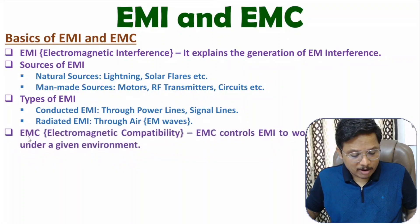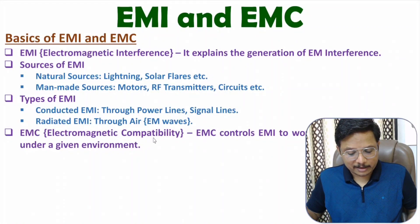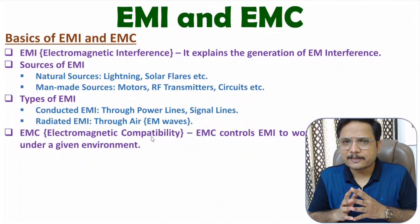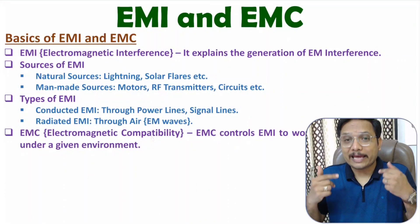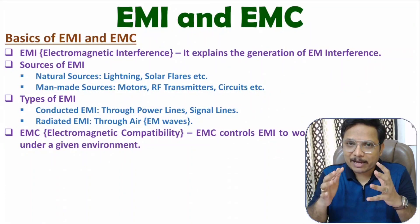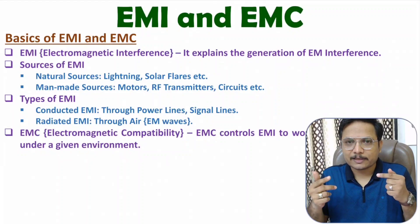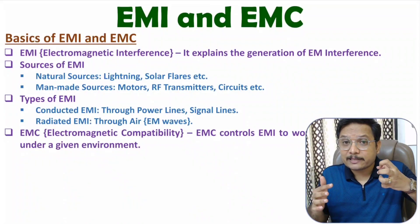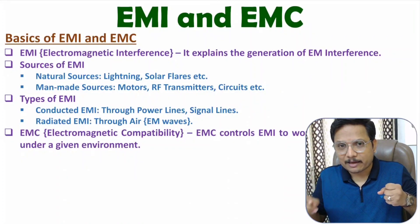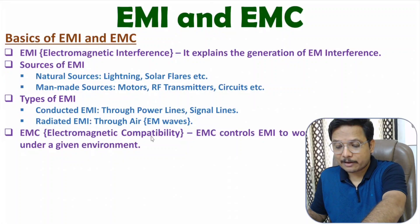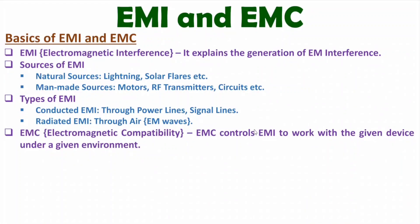If you talk about EMC, then that is electromagnetic compatibility. EMC explains control over EMI. EMI is electromagnetic interference, and EMC explains control over EMI — under how much EMI a given device is functioning has been defined by EMC. So, EMC controls EMI to allow a given device to work under a given environment.